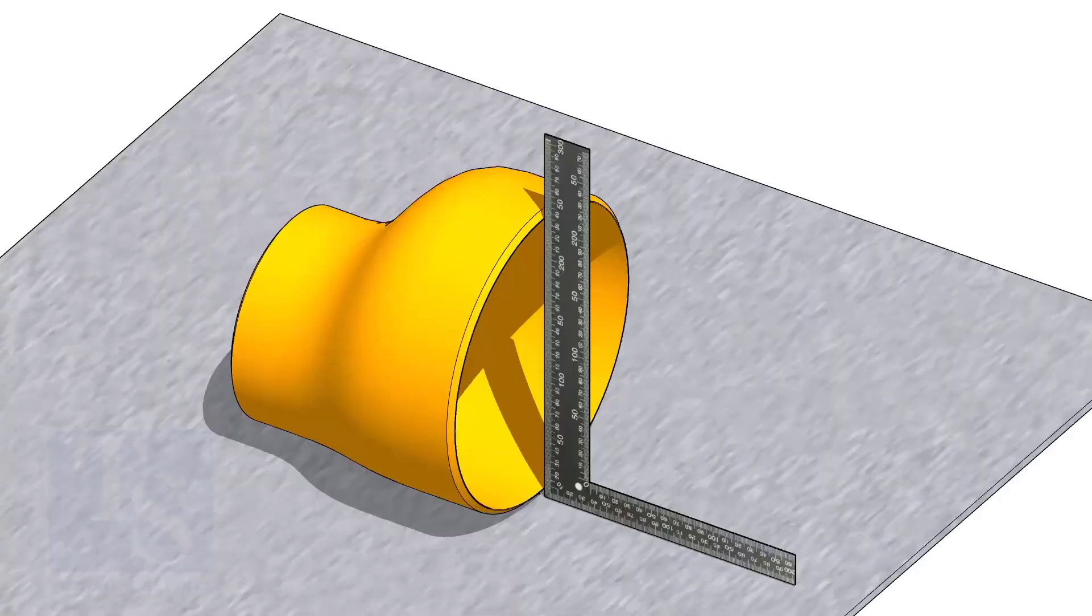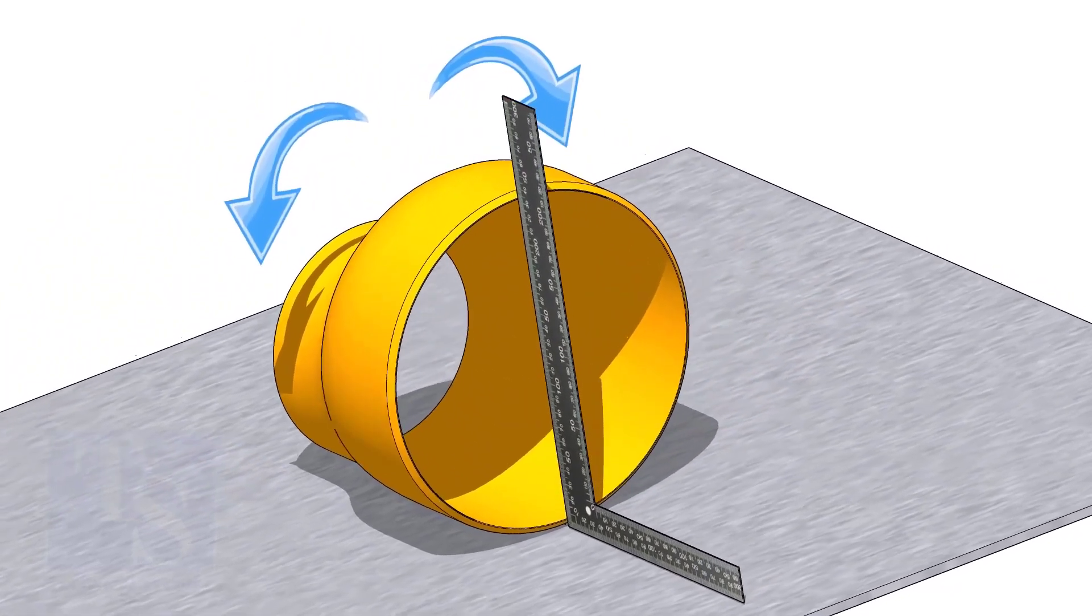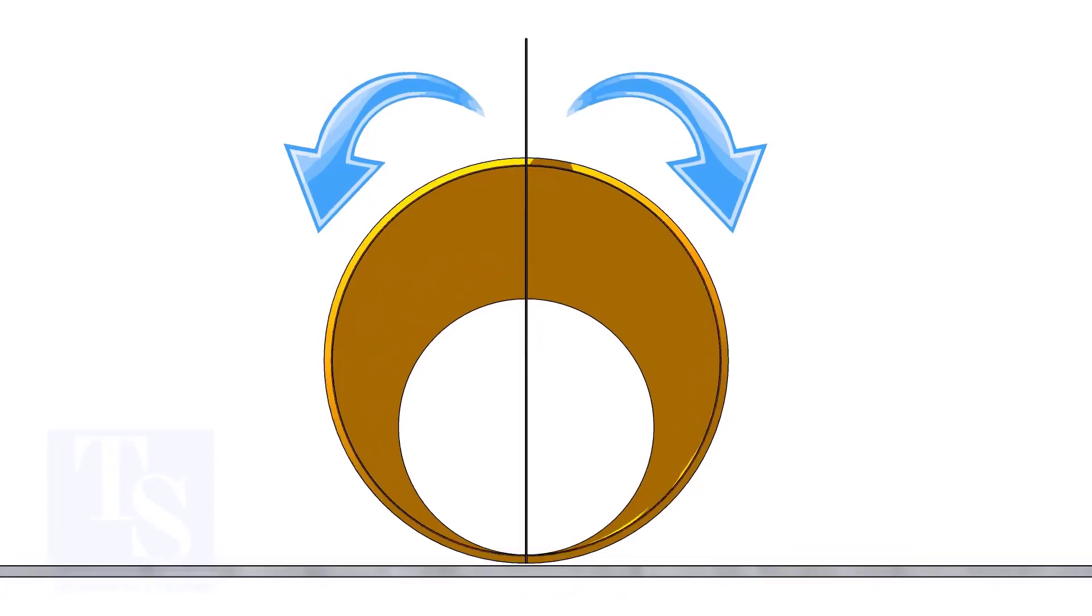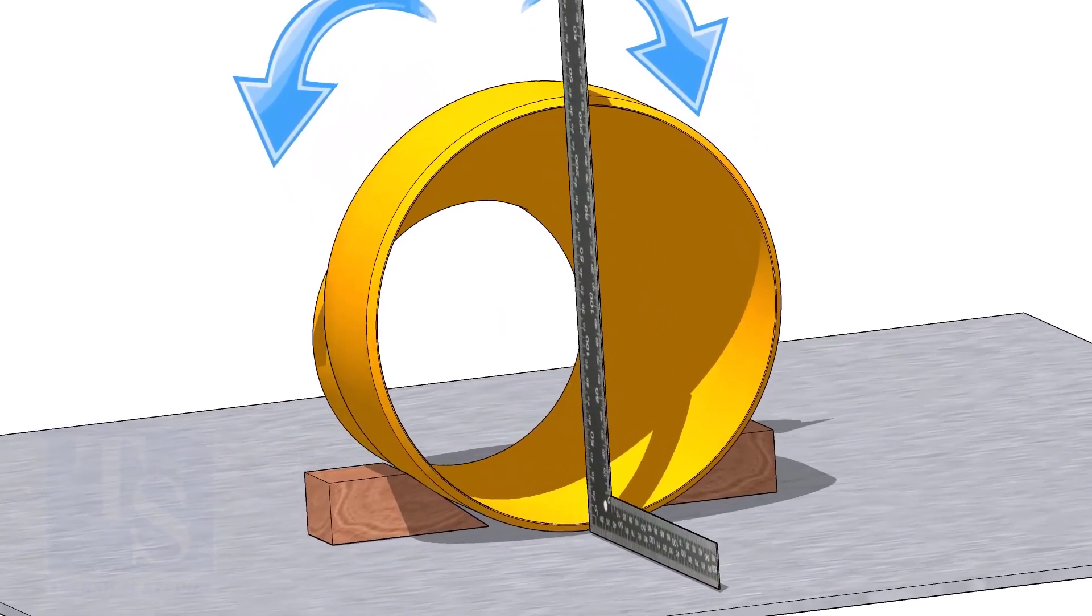Put the reducer on a straight plate. Hold a right angle at the large side of the reducer, and gently rotate the reducer back and forth until the face of the reducer is square to the right angle.